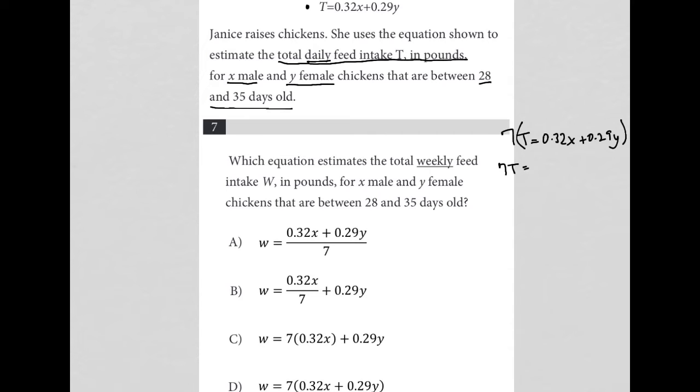Seven times 0.32 in my calculator, I get 2.24X. And then 7 times 0.29 in my calculator is 2.03, so plus 2.03Y.